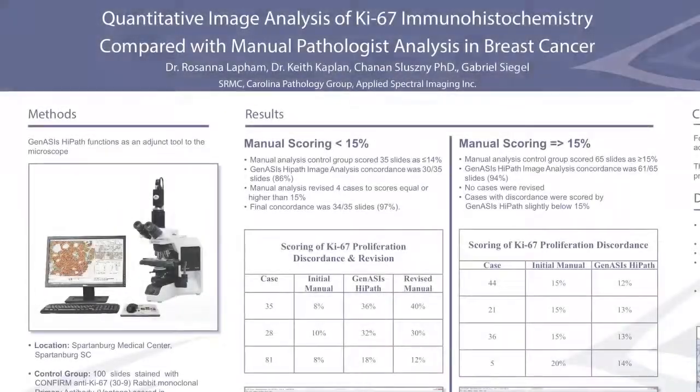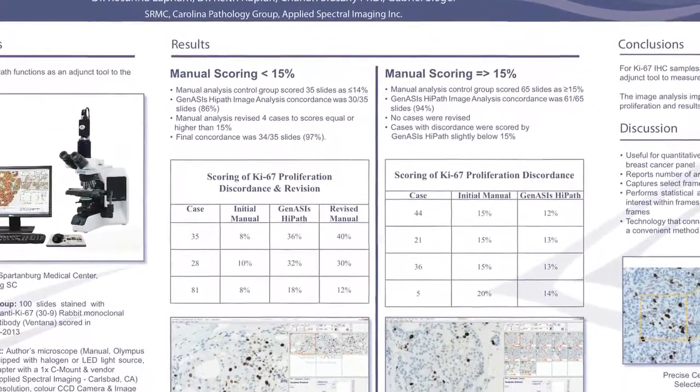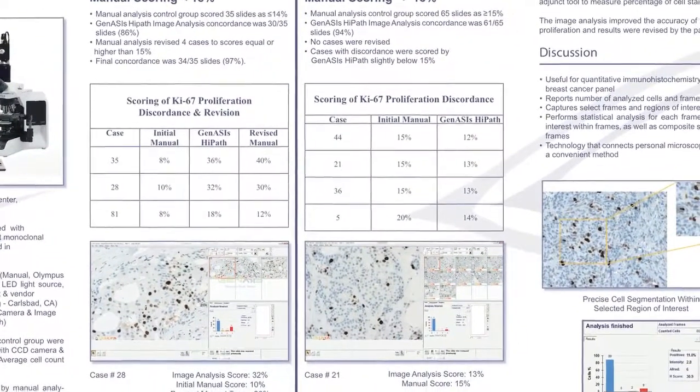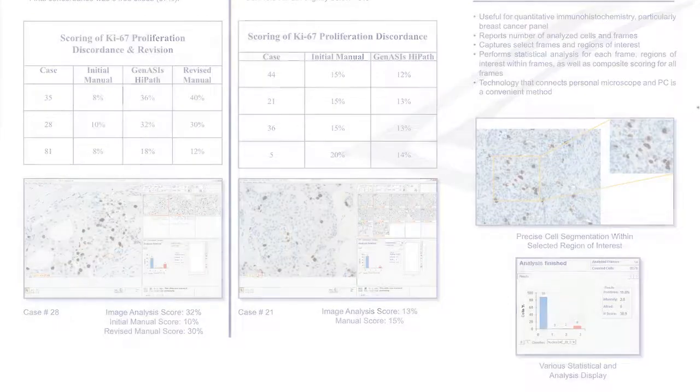Clinical studies on KI67 in breast cancer have proven that the Genesis HiPath gives superior accuracy compared to manual analysis without compromising lab efficiency.